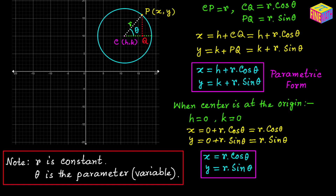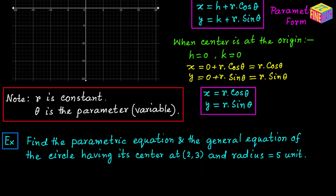I hope things are clear up to this point. Next we are going to take an example. Find the parametric equation and the general equation of the circle having its center at (2, 3) and radius equals 5 units. So we have been provided with the location of the center — that means we have been provided with the value of H and K — and also we have been provided with the value of R.